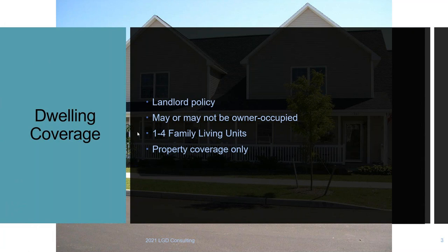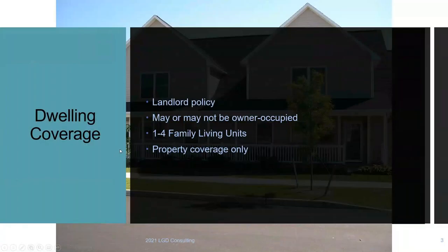Dwelling policies cover one to four family living units. With a homeowner's policy you can insure a one-to-two unit structure, like a single family home or a duplex, but you must live there. If it's a three-plex and you live in one unit but rent out the others, you go to a dwelling policy. If it's larger than four units, you go to a Business Owner Policy — up to six stories, 100,000 sq ft, and three million in annual revenues.